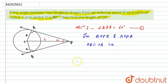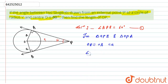As we know, the tangent drawn from an external point onto the circle is perpendicular to the radius. Since OA and OB are both radii, angle OAP and angle OBP will both be equal to 90 degrees.